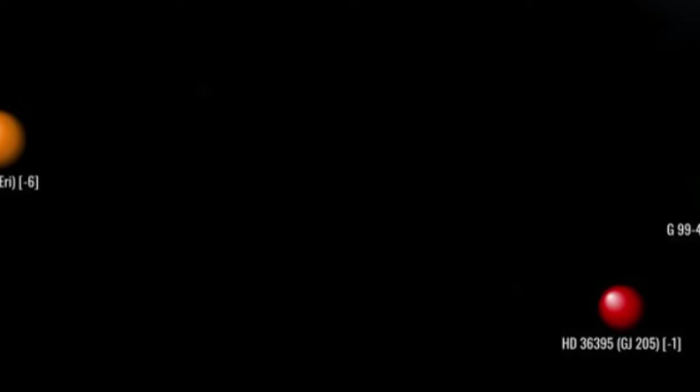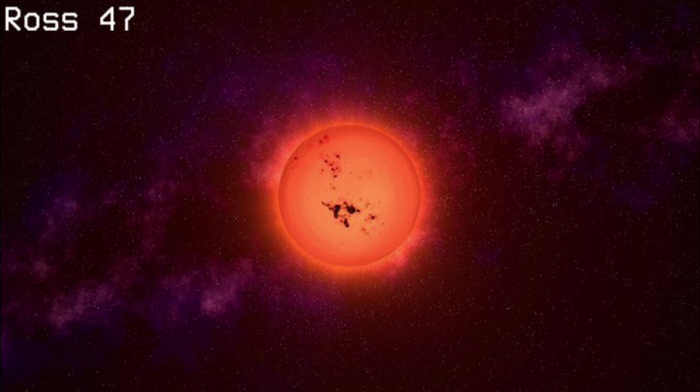Many parsecs west and one parsec north, we arrive at Ross 47, a red dwarf about a quarter of the mass and radius of the Sun.